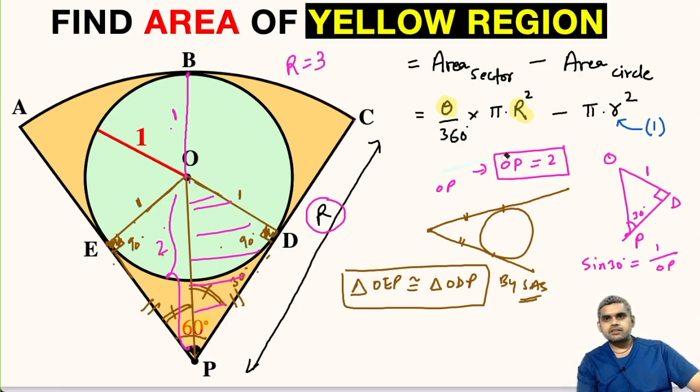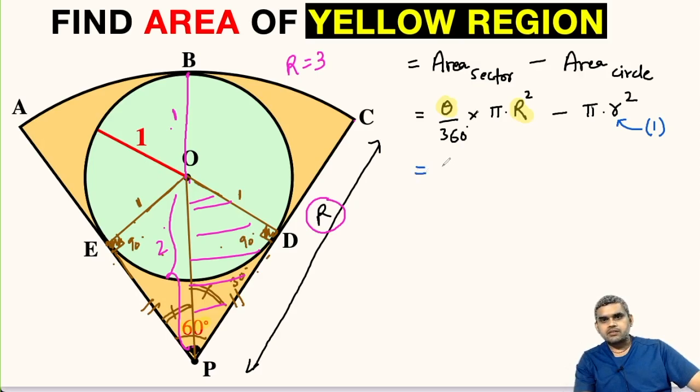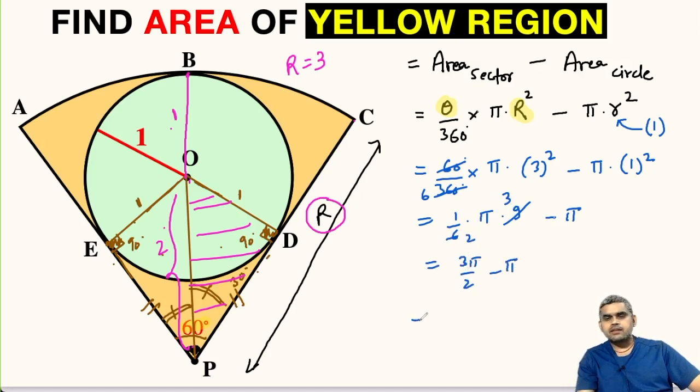Let me erase these things. Now let us substitute the values. Theta is 60 degree divided by 360 degree multiplied with pi times 3 squared minus pi times 1 squared. This will be 1 upon 6 times pi times 9 minus pi. We can divide it, by 3 it will be 3 by 2. 3 pi by 2 minus pi. This will be pi by 2 square units. The area of this yellow shaded region will be pi by 2 square units.